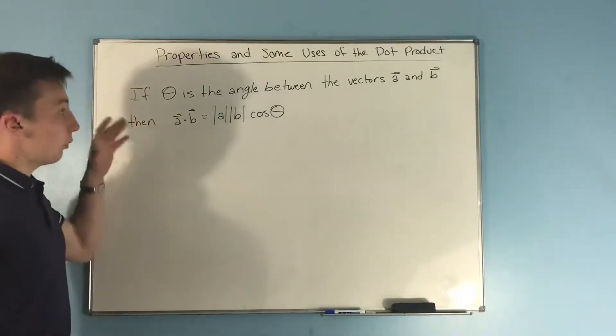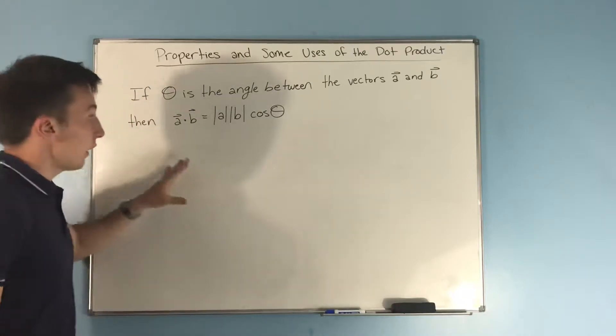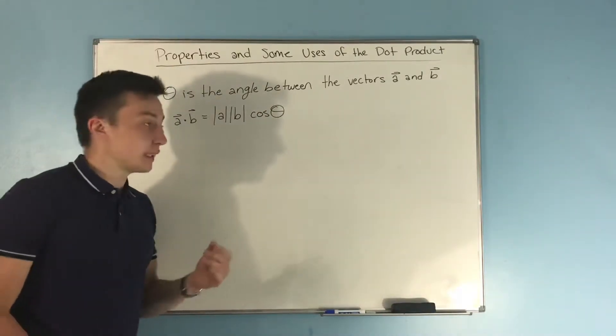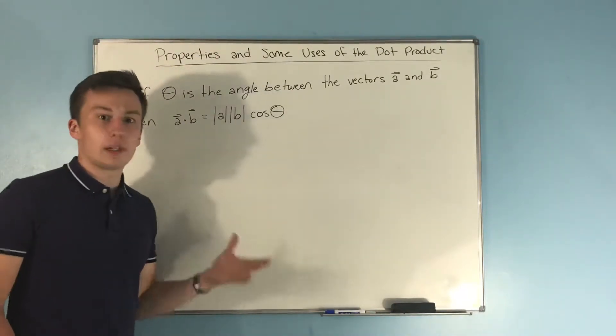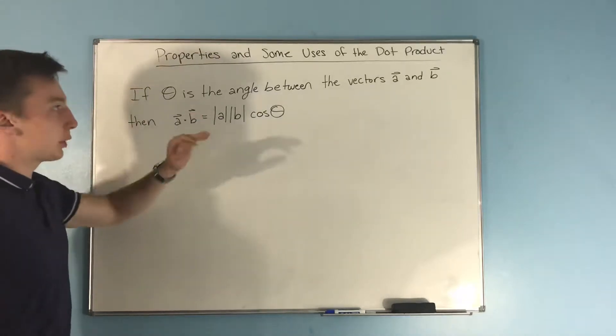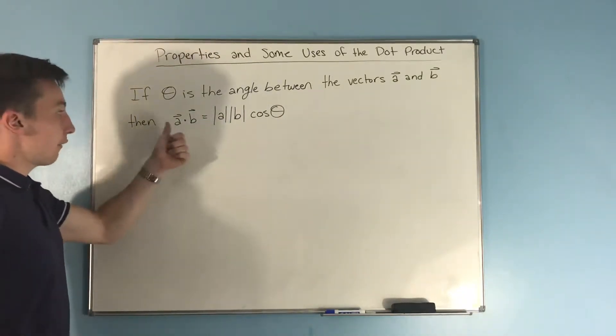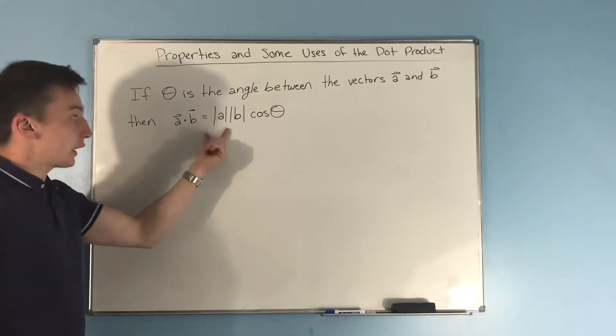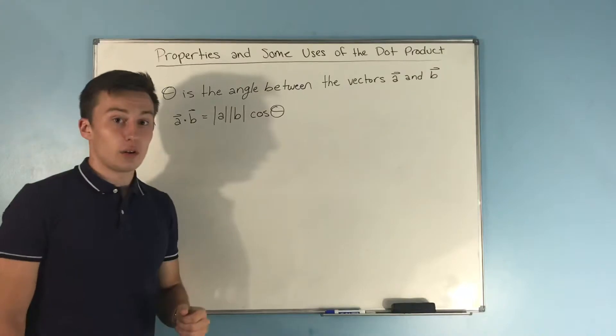Now here's kind of more of the uses of the dot product. This is something that's actually really useful in physics and stuff, and it's useful in calculus 3 too, but I've used it I think more in physics. Now if theta is the angle between vectors a and b, then you basically have that a dot b is equal to the magnitude of a times the magnitude of b times cosine theta.